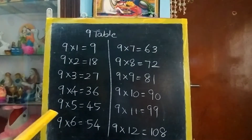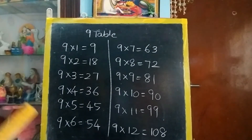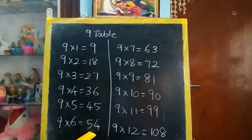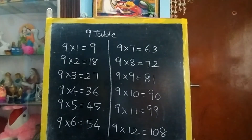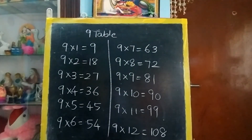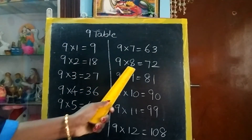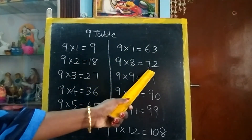9 5's are 45. 9 6's are 54. 9 7's are 63. 9 8's are 72.